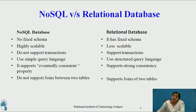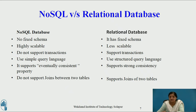Now let's see the difference between NoSQL databases and relational databases. NoSQL databases do not have a fixed schema, whereas relational databases have a fixed schema. NoSQL databases are highly scalable, whereas relational databases are less scalable. NoSQL databases do not support transactions, whereas relational databases support ACID properties of transactions. NoSQL uses a simple query language similar to SQL, whereas relational databases use SQL. NoSQL databases support eventual consistency, whereas relational databases support strong consistency. NoSQL databases do not support joins between tables, whereas relational databases support joins using join queries.